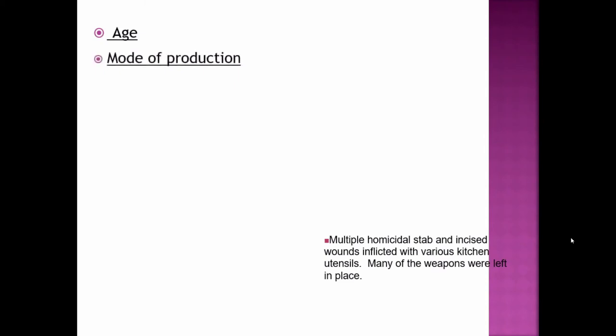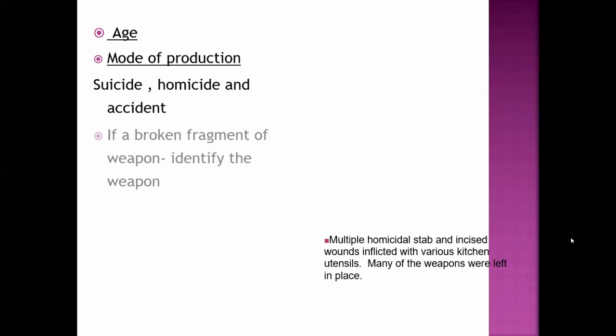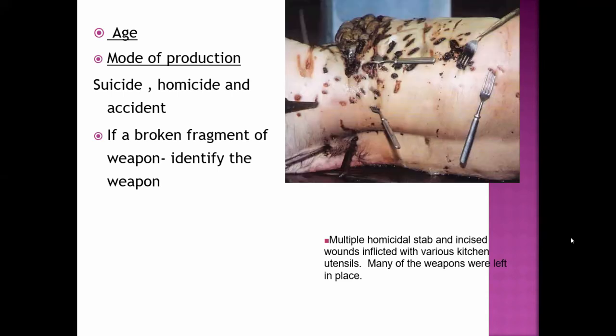Age is similar to incised wound. Mode of production can be suicide, homicide, and accident. Any one of them can occur in penetrating wound. If a broken fragment of a weapon is present inside the wound track, we can identify the weapon as well. There is this homicidal stab injury with various kitchen utensils. Many of the weapons were left in place. Even this fork was used, and we talked about the type or class of the weapon. If fork is used, then there is a cluster of two or three punctured wounds. This is an ideal example for punctured wound.